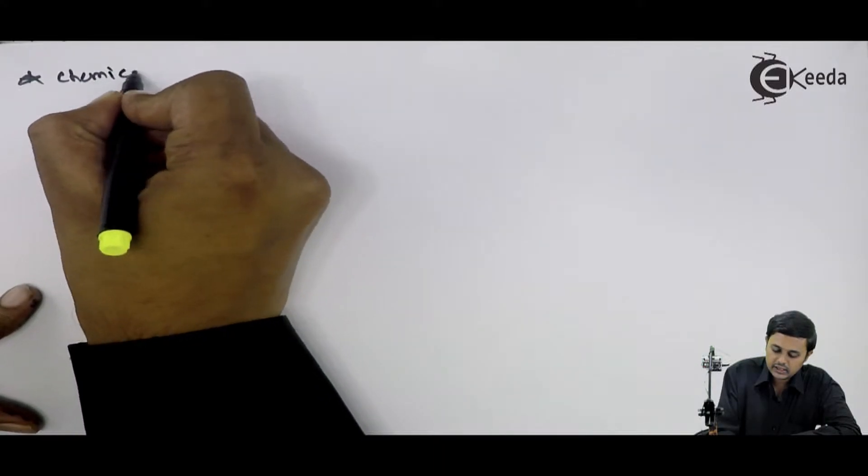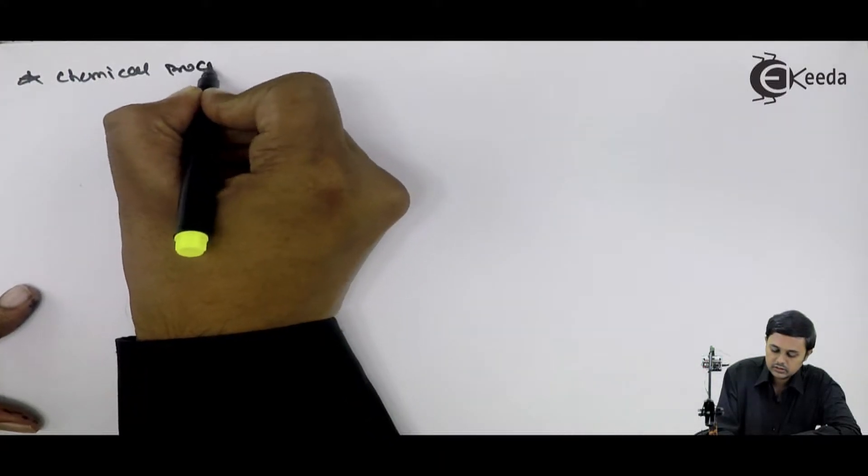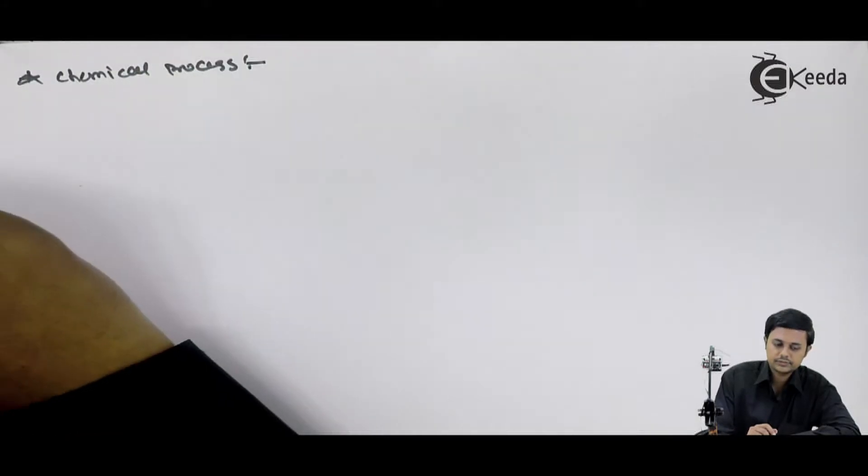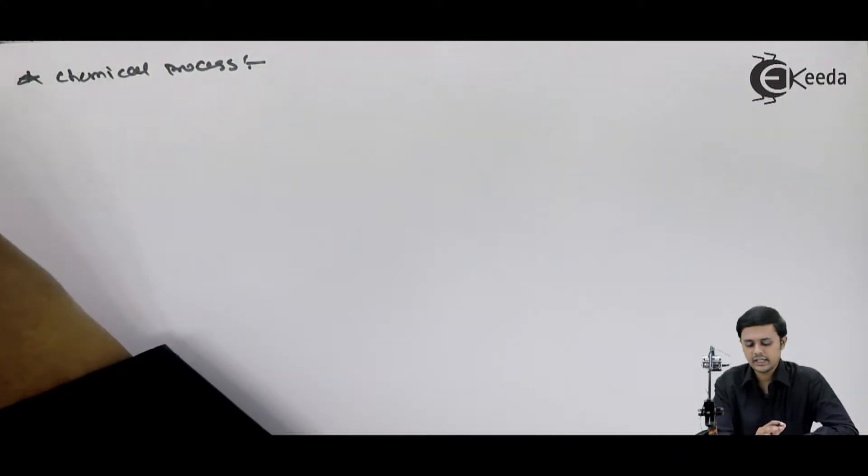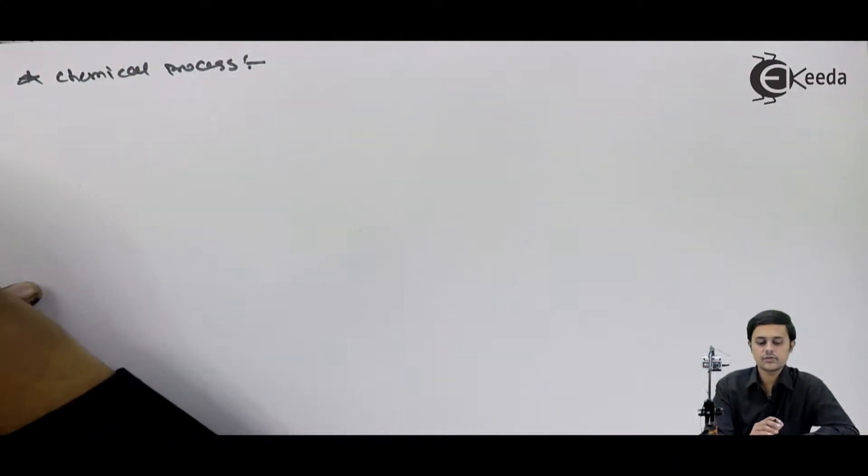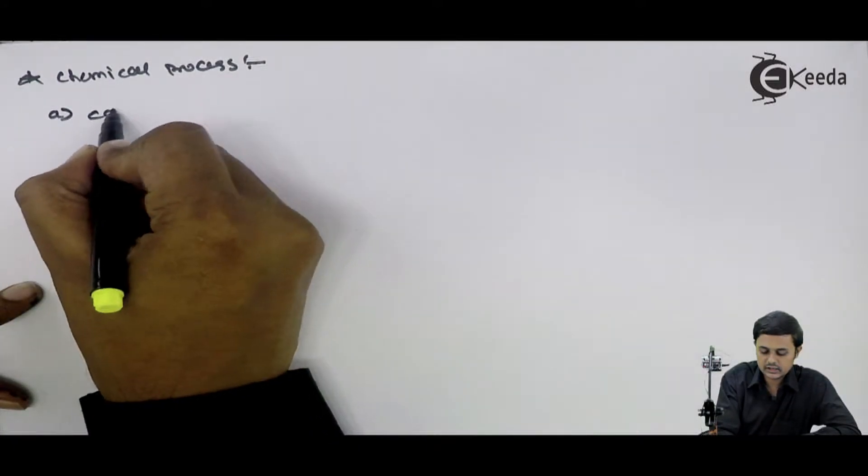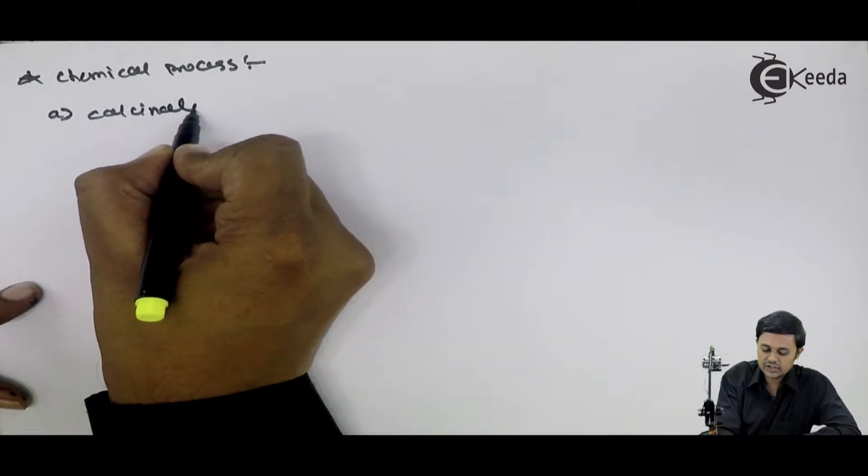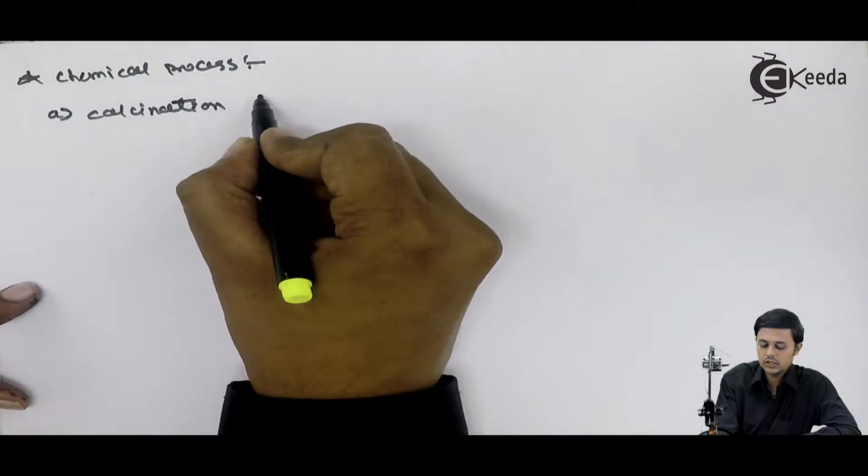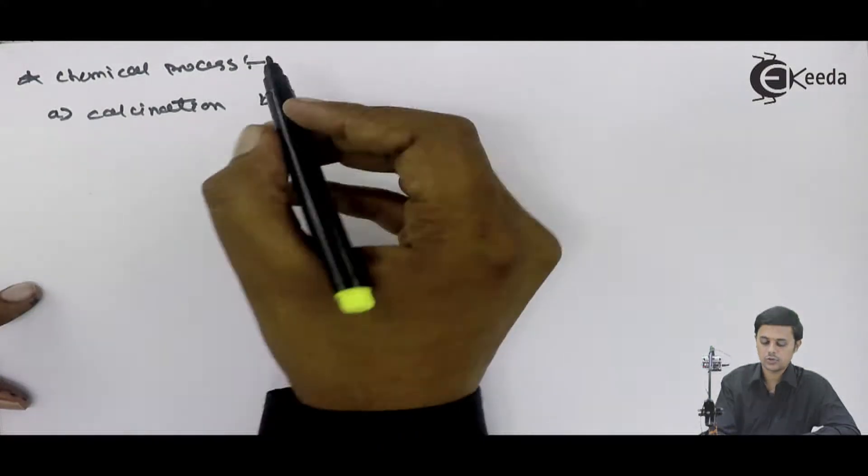Right now we will talk about chemical process or we can call it chemical concentration. There are two ways to carry out the chemical concentration. First way we call it calcination, second we call it roasting.